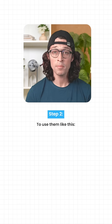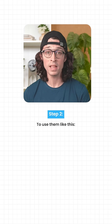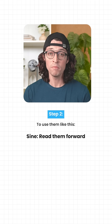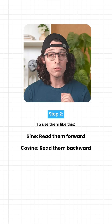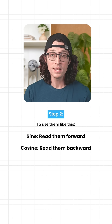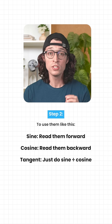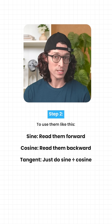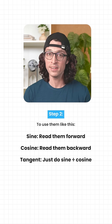The next step is to use them like this. Sine — read them forward. Cosine — read them backward. Tangent — just do sine divided by cosine. Done.